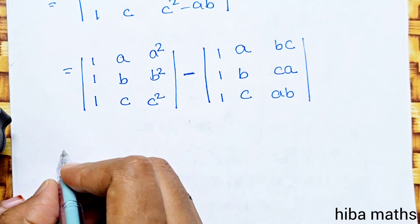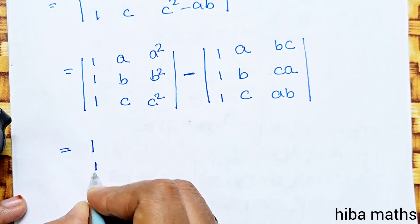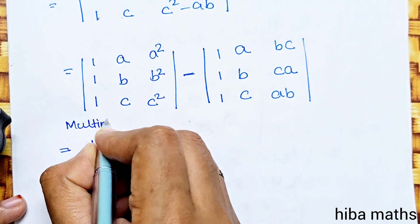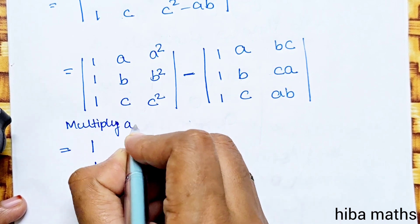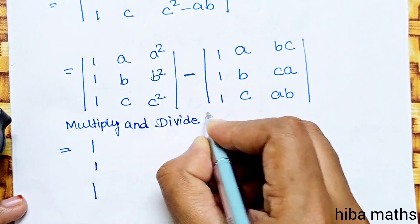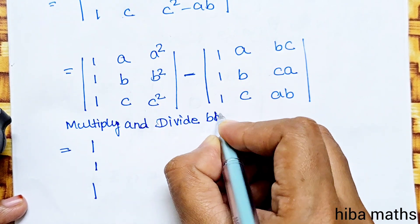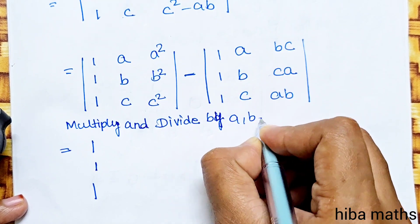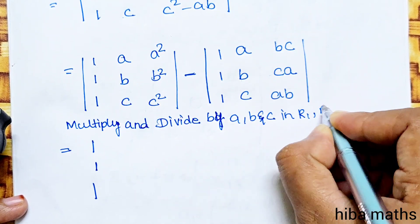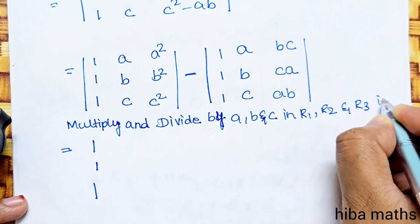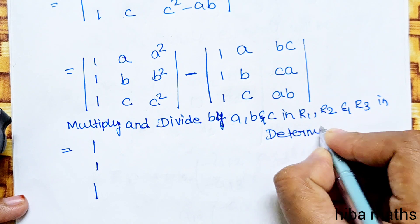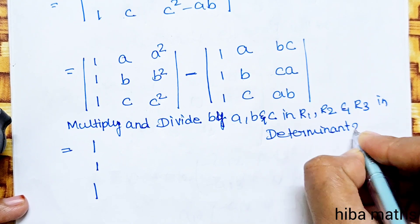That is equal to 1, 1, 1. The first one is multiply and divide by A, B, and C in R1, R2, and R3 in determinant 2.